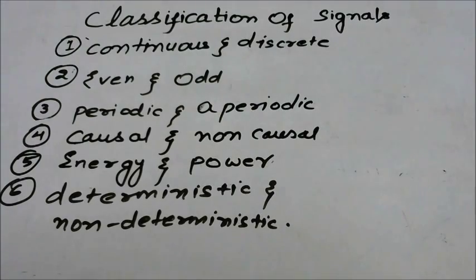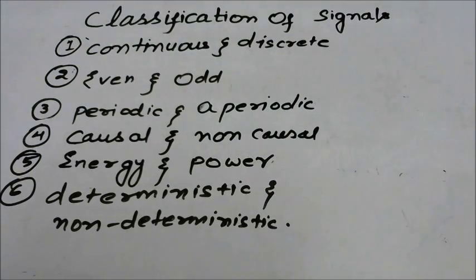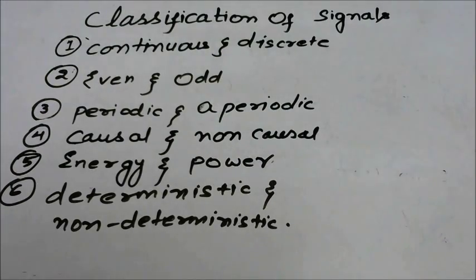Let us see about the classification of signals. Signals are of six types: continuous and discrete, even and odd, periodic and non-periodic, causal and non-causal, energy and power, and deterministic and non-deterministic signals. Let us see what each of those means.